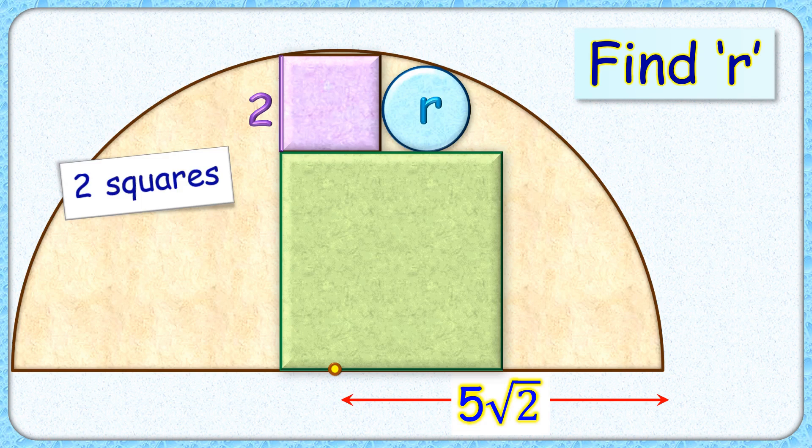Welcome everyone. This interesting question given to us has two squares and a circle inside a semicircle with radius 5√2 cm.